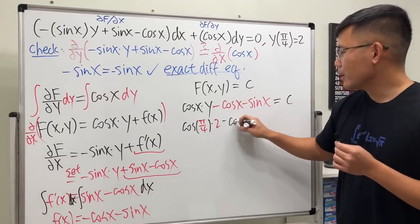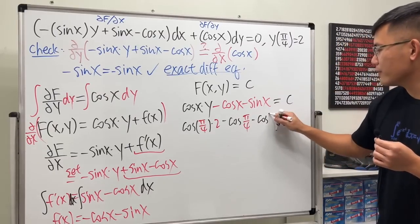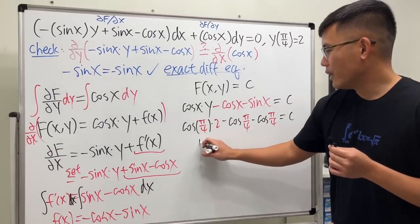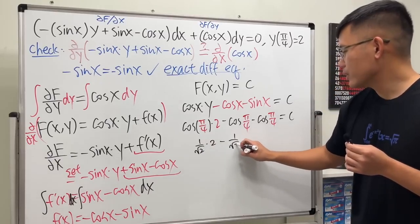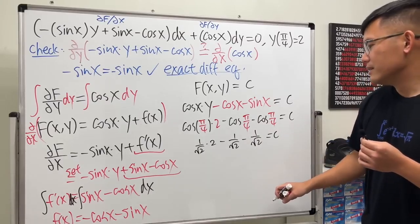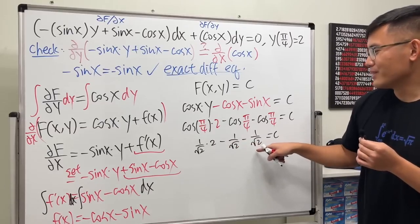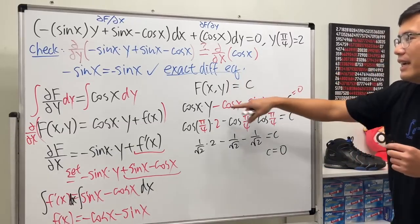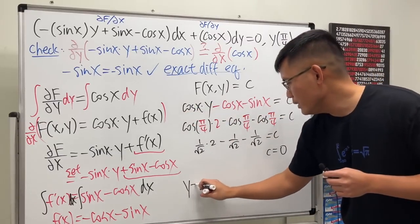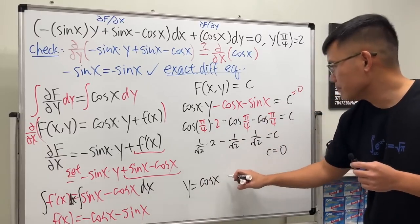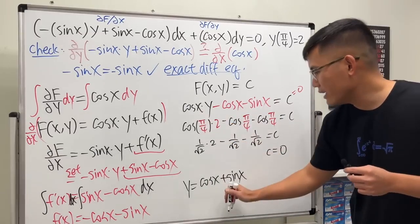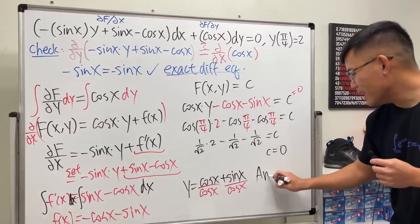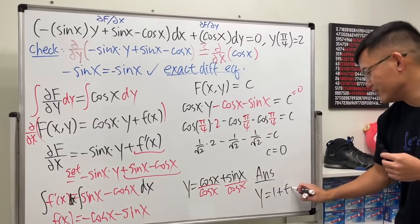Now we apply the initial condition. Plugging in x equals pi over 4 and y equals 2: cosine of pi over 4 times 2, minus cosine of pi over 4, minus sine of pi over 4 equals c. This gives 1 over root 2 times 2 minus 1 over root 2 minus 1 over root 2, which is 2 over root 2 minus 2 over root 2, so c equals 0. Setting c equal to 0 and dividing through by cosine x, the final answer is y equals 1 plus tangent x.